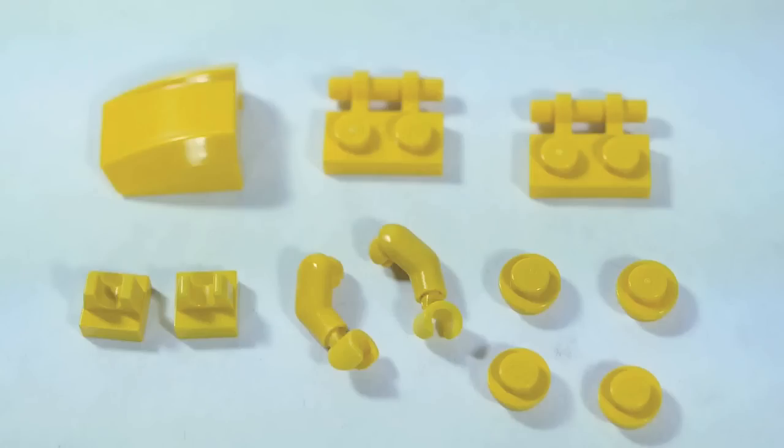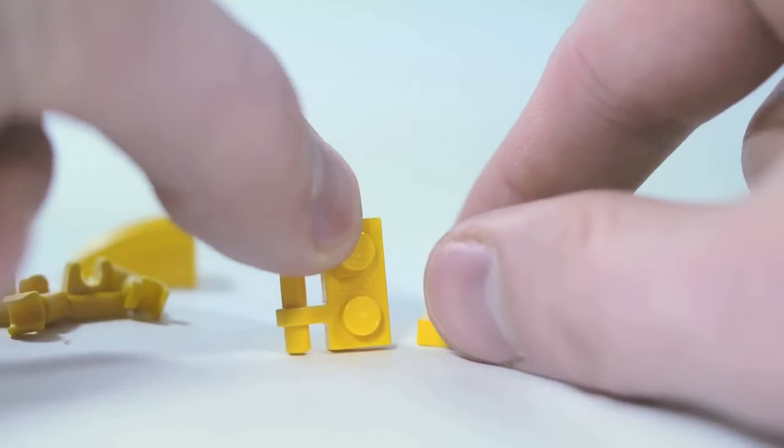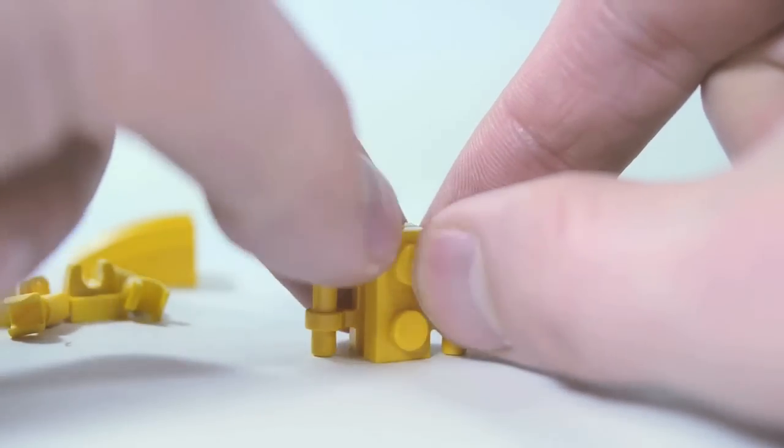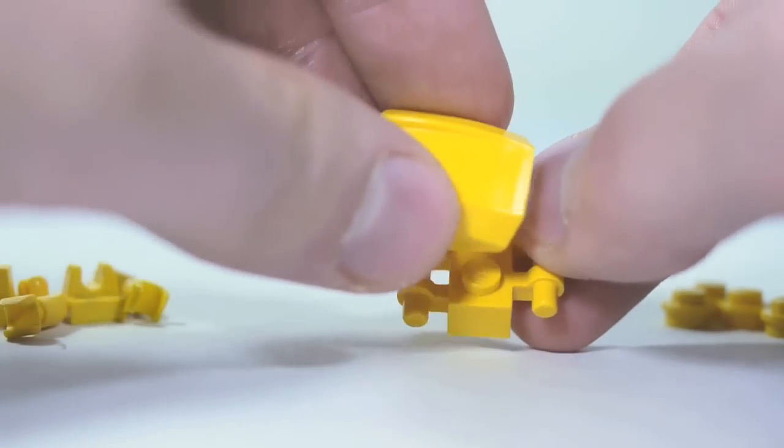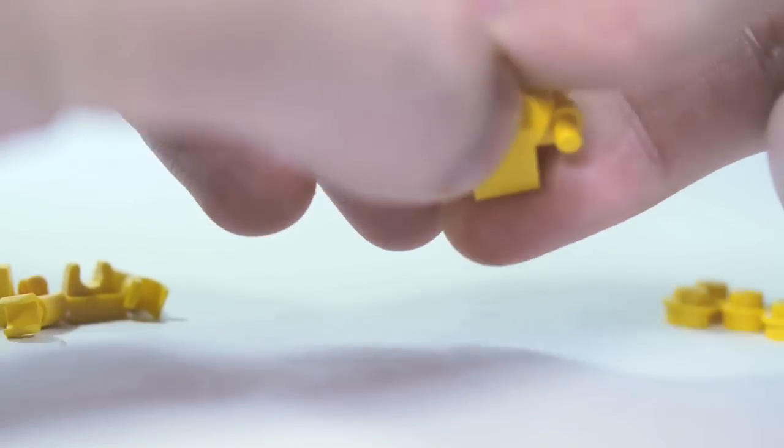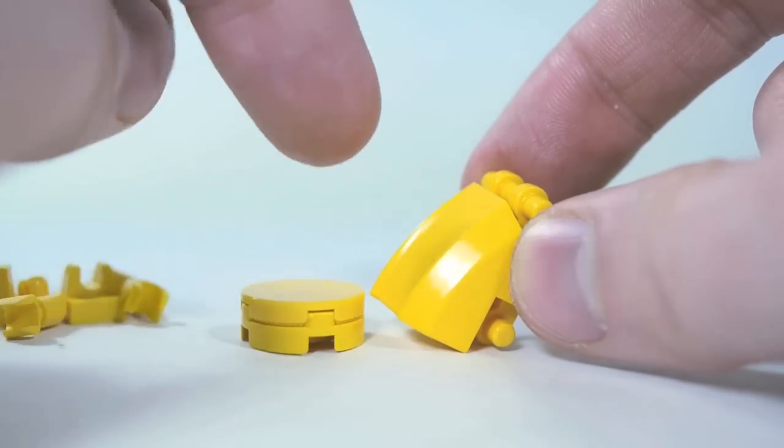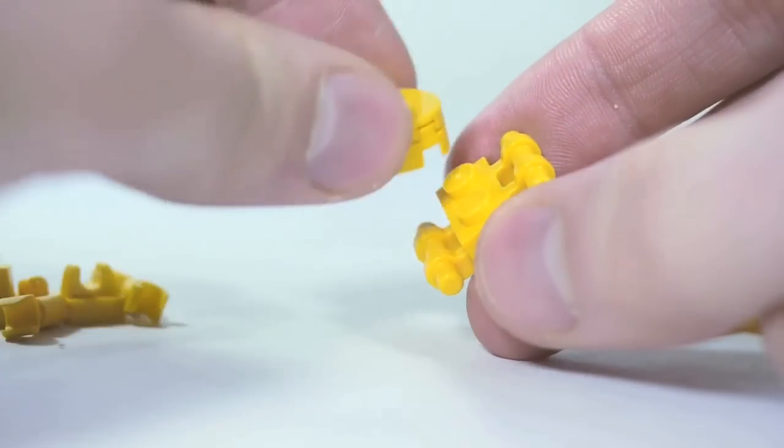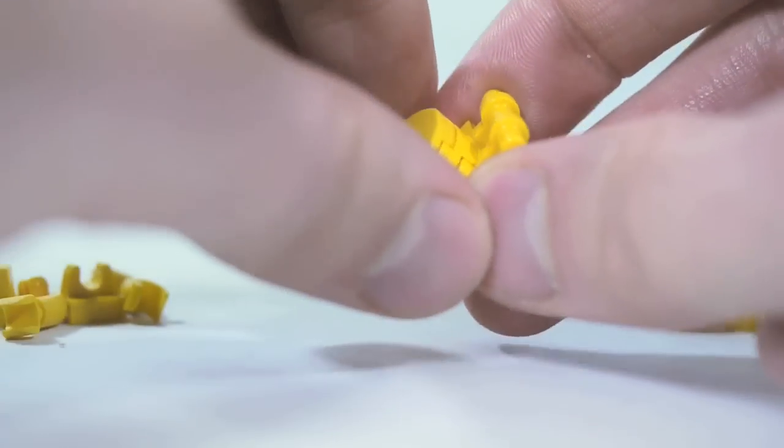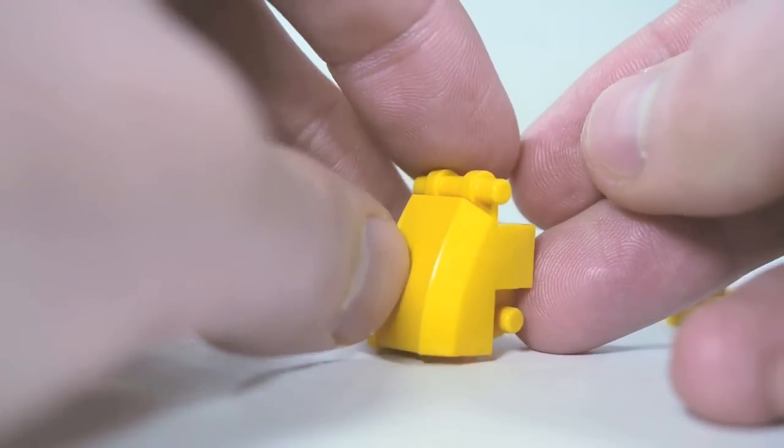These are the pieces you'll need for Pikachu's body. So the key piece here are these 1x2 plates with handles on them. I'm going to connect them like that. I'm going to take one of these 2x2 curvy slope things. If you don't have that piece, you can also put a 2x2 round plate with a 2x2 round tile for his cute little stomach there. This piece is better, but use what you got.